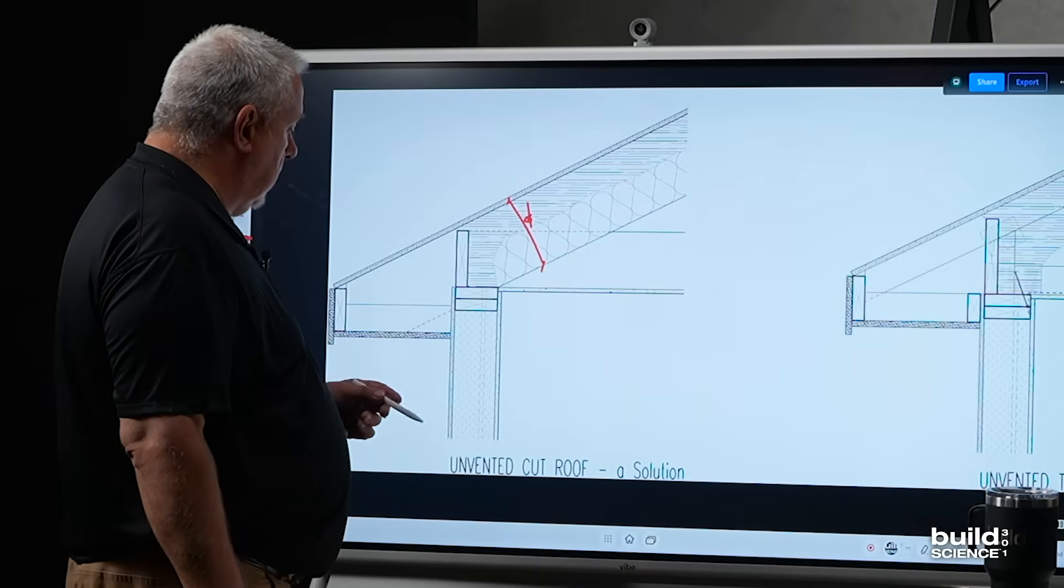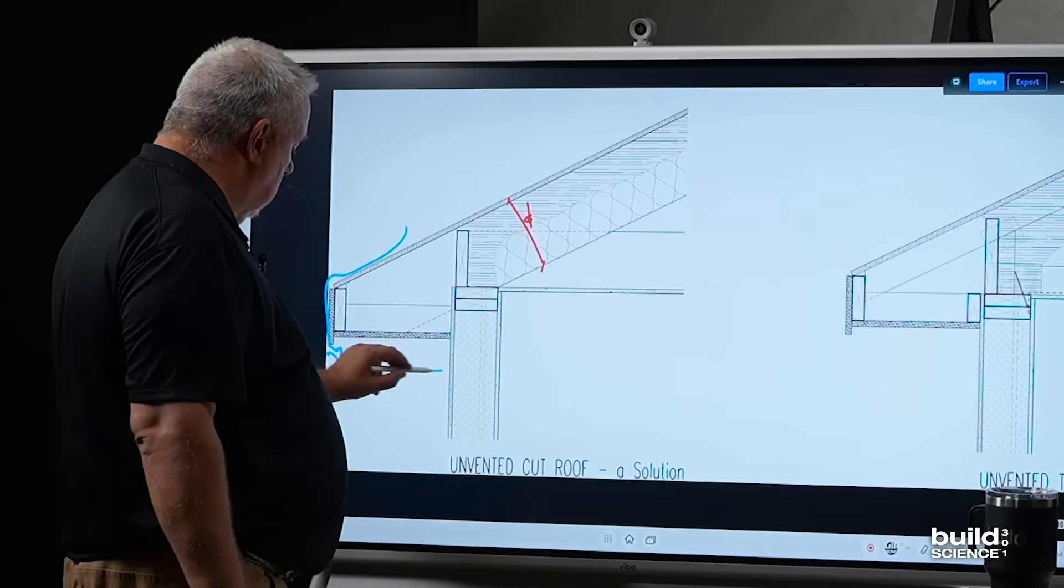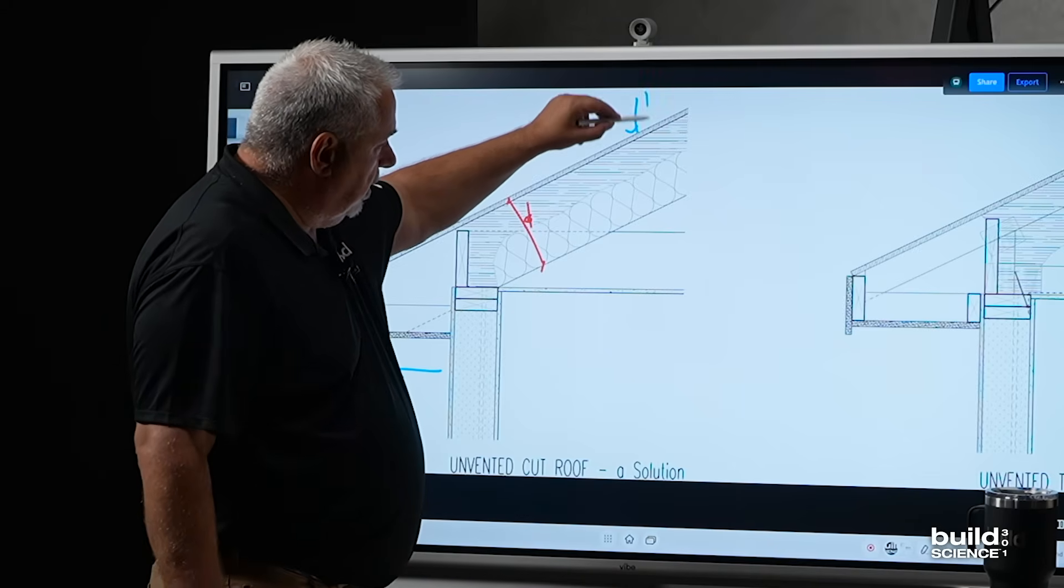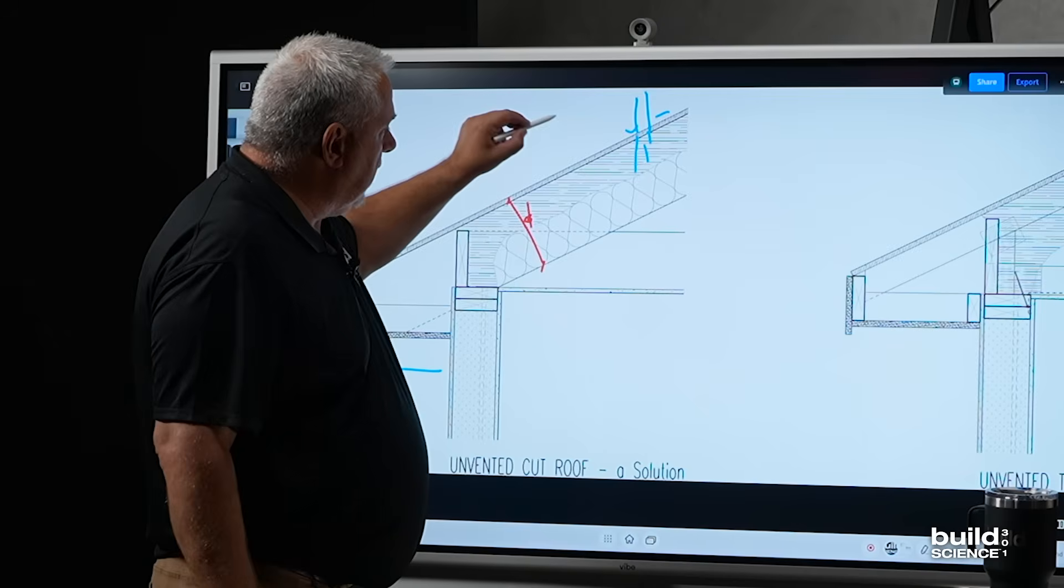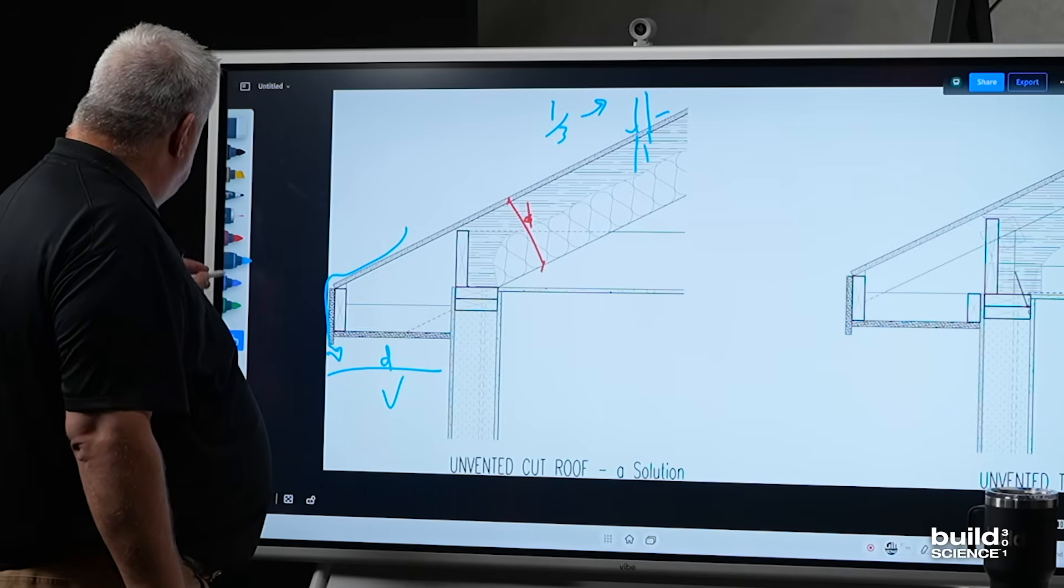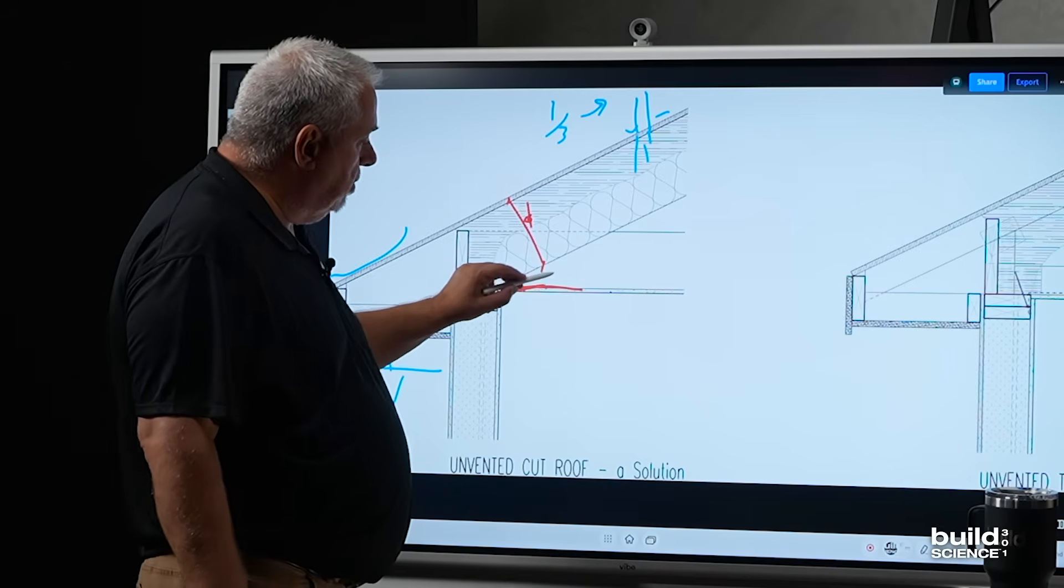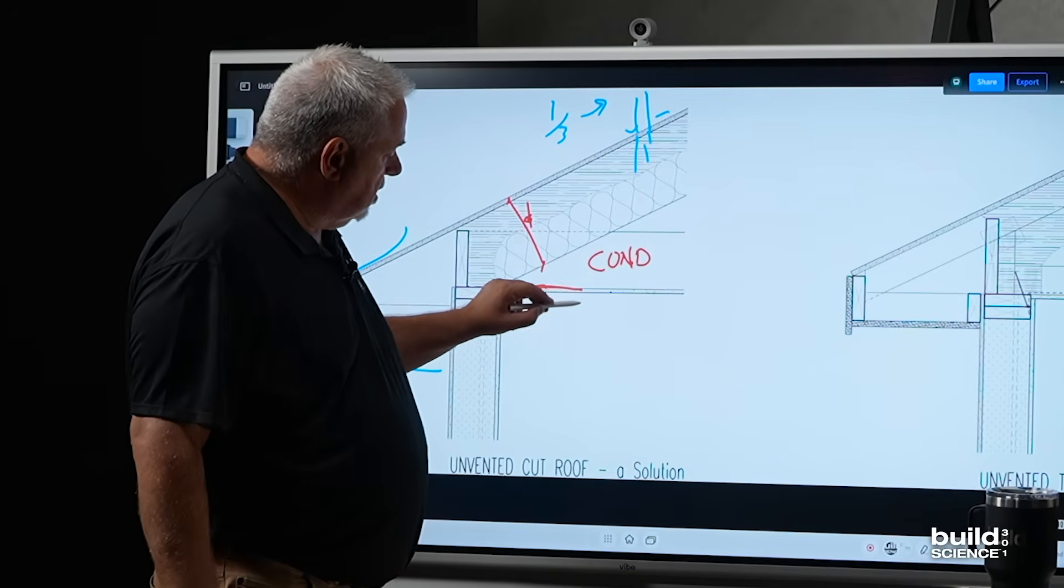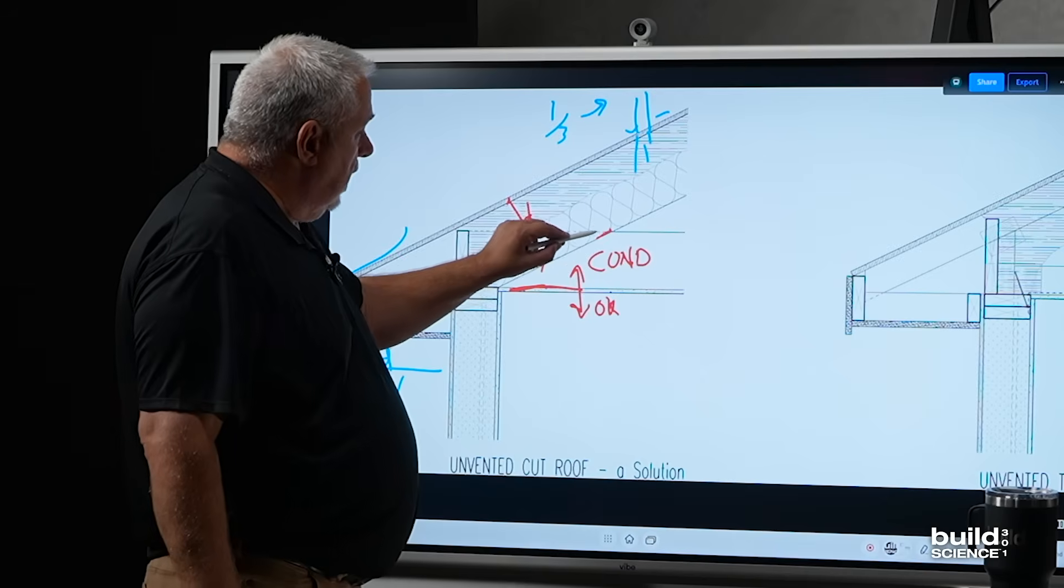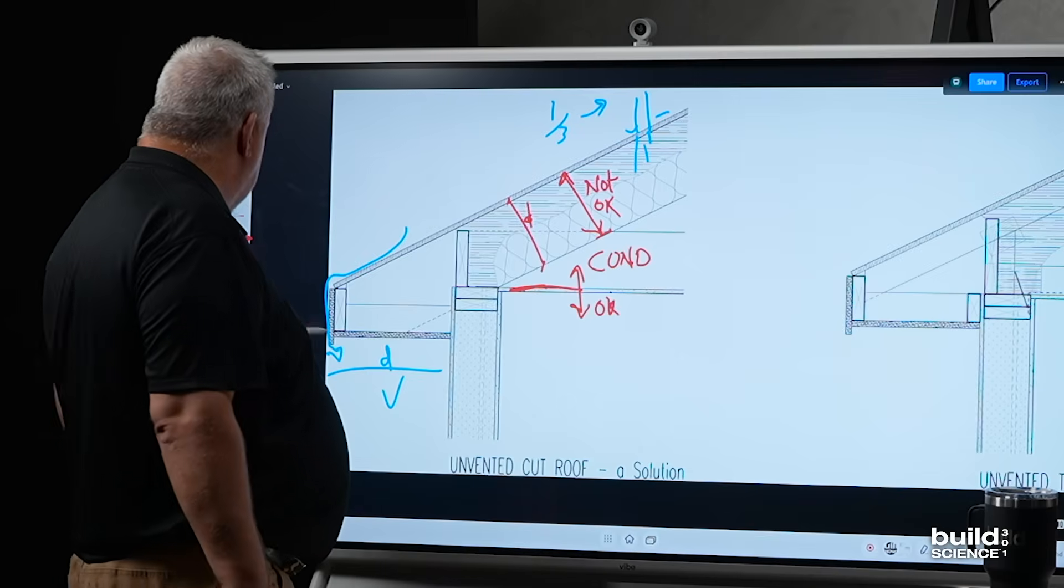In terms of the unvented cut roof here, water, we take care of by dripping it over. Good distance here, check mark, water control, we're taking care of. In terms of air leakage, we don't have to deal with air leakage here because this is now a conditioned space. So, any air movement across here is okay. That's part of the air conditioned envelope of the house. Air movement across here, not okay. So, we need to solve for that.